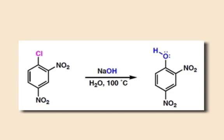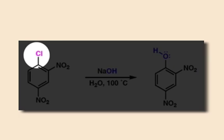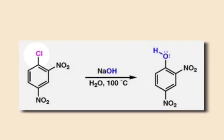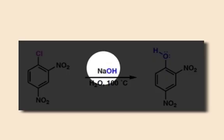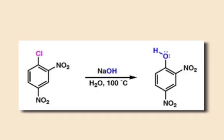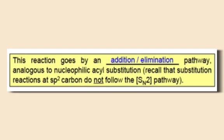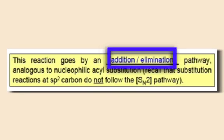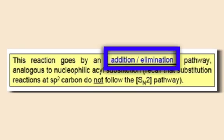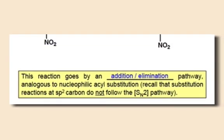With an appropriate leaving group on the ring as well, this electron-poor ring can react with a strong enough nucleophile to substitute for that leaving group. The mechanism by which this takes place is an addition-elimination pathway, and we'll look at it on the next slide.